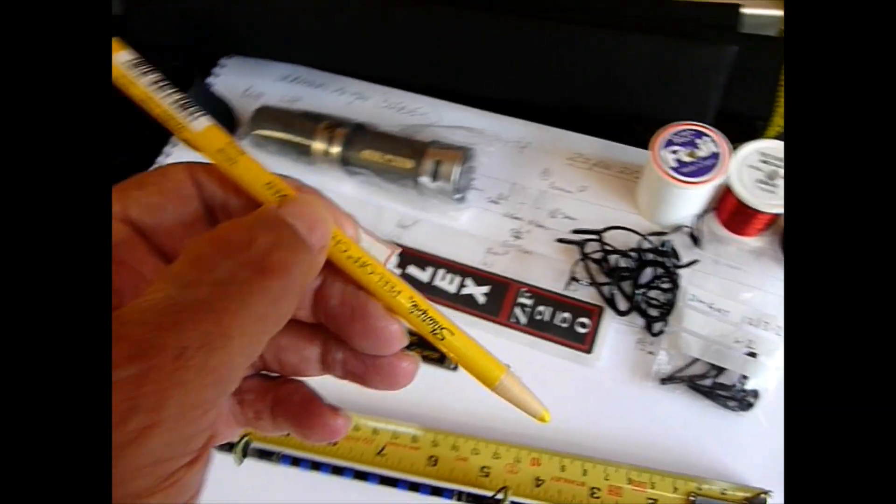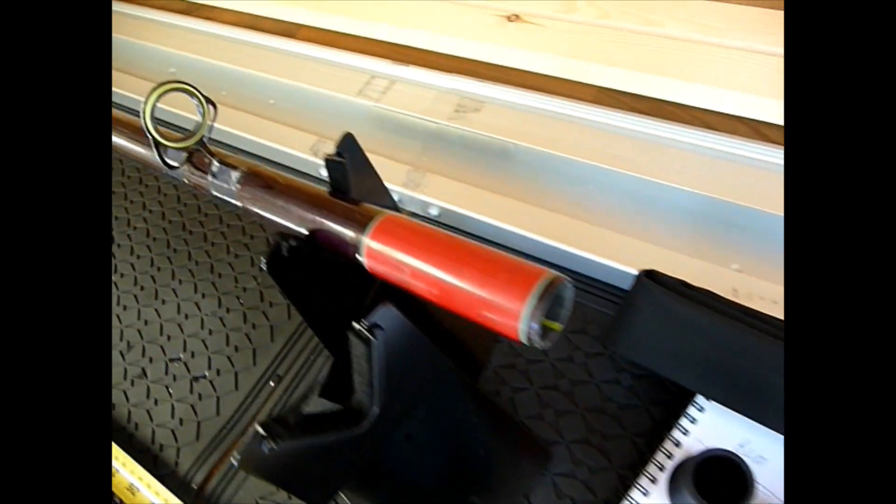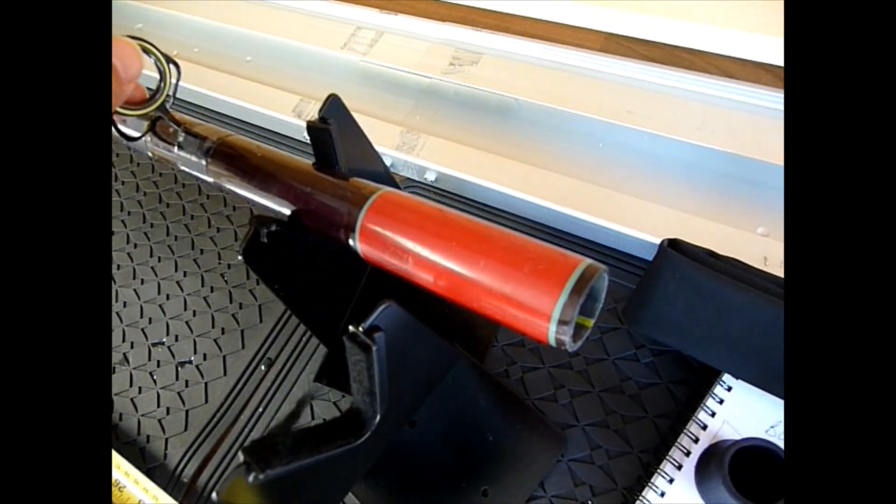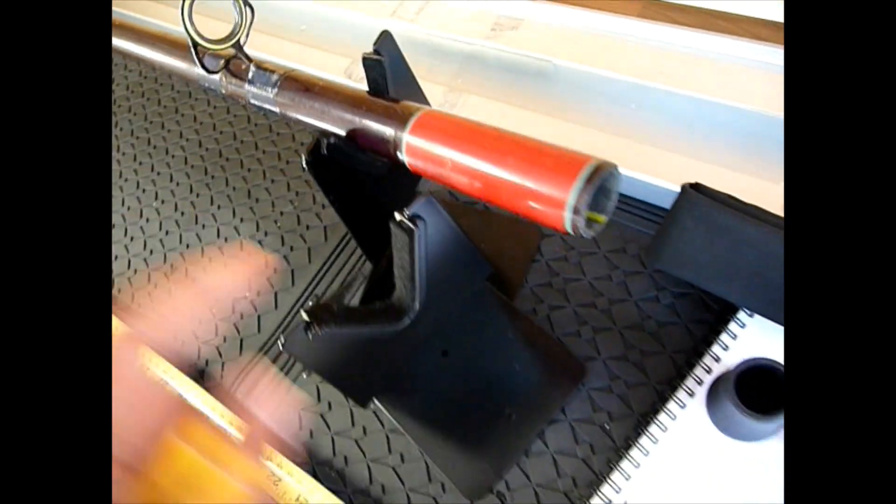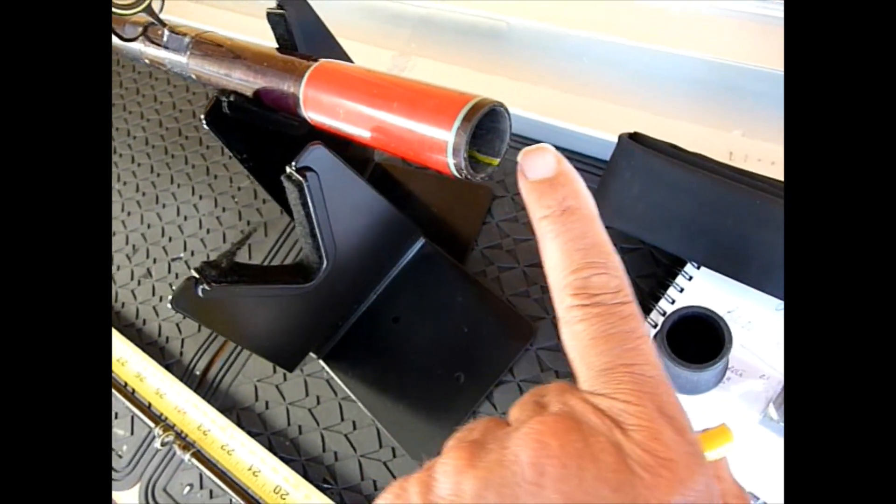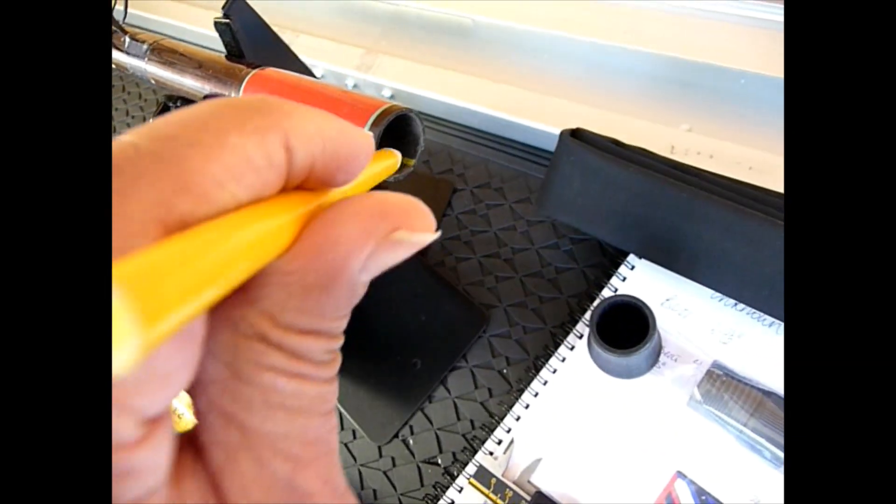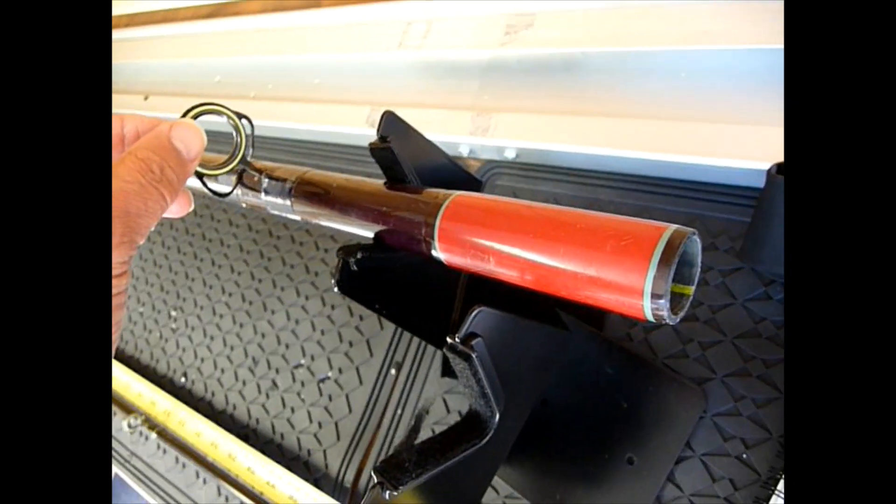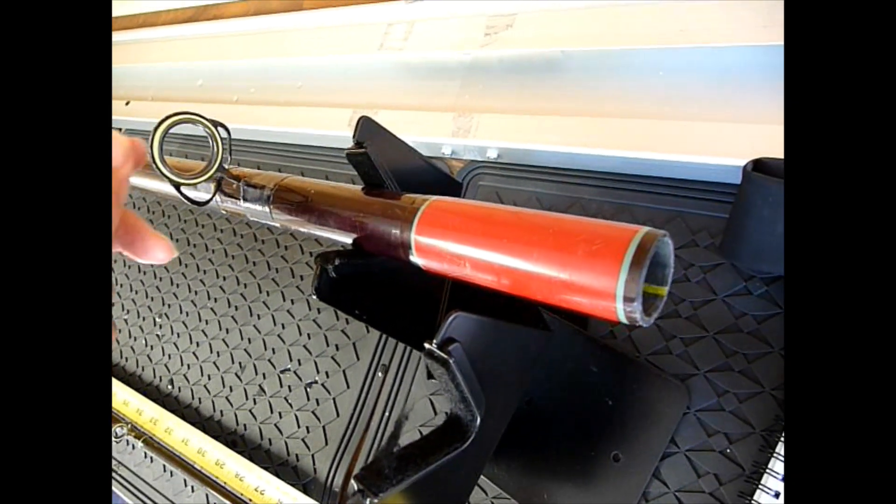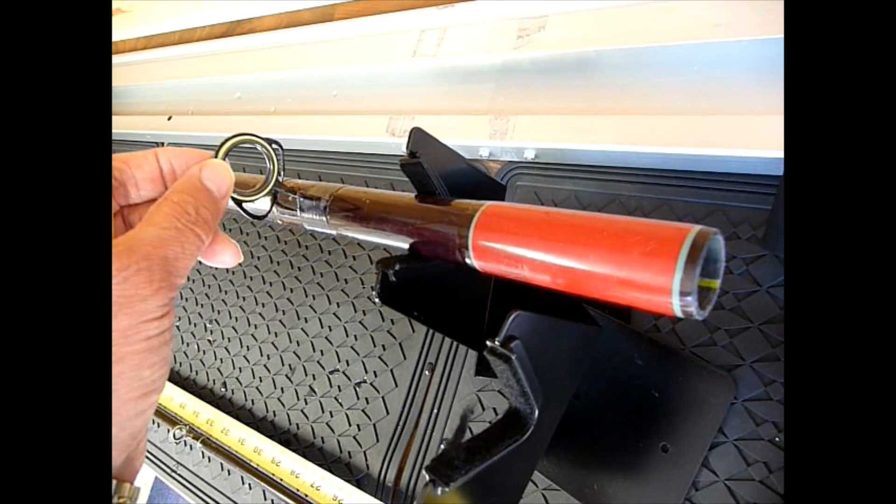Now a tip for you. Try and graph pencil, and then you want to have a look at the butt guide and mark the location of that on the butt section. What I do is I just put a yellow mark inside the spigot there to show that the guide is on the top. This rod's been in use for a number of years, so it's got used to that guide being in that position.